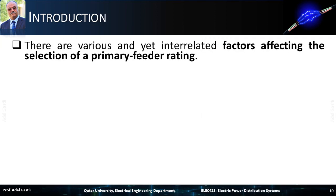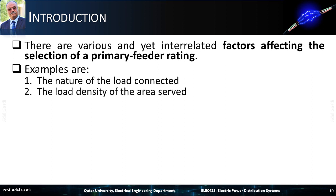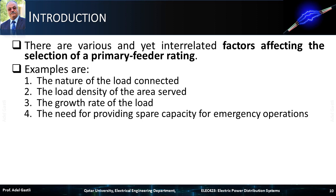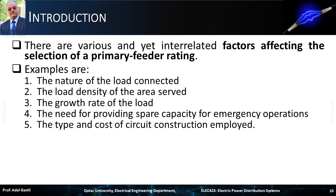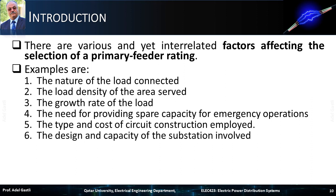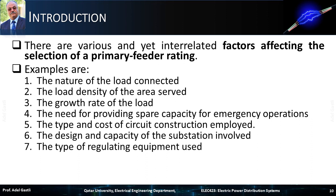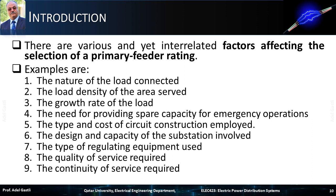There are various and yet interrelated factors affecting the selection of a primary feeder rating. Examples are: the nature of the load connected, the load density of the area served, the growth rate of the load, the need for providing spare capacity for emergency operations, the type and cost of circuit construction employed, the design and capacity of the substation involved, the type of regulating equipment used, the quality of service required, and the continuity of service required.